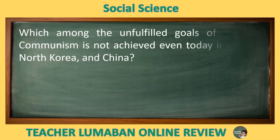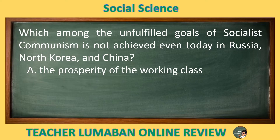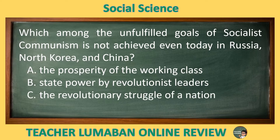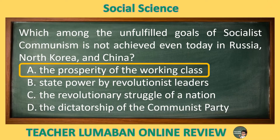Which among the unfulfilled goals of Socialist Communism is not achieved even today in Russia, North Korea, and China? Letter A: The Prosperity of the Working Class. Letter B: State Power by Revolutionist Leaders. Letter C: The Revolutionary Struggle of a Nation. Letter D: The Dictatorship of the Communist Party. The correct answer is Letter A, The Prosperity of the Working Class. Among the unfulfilled goals of Socialist Communism not achieved even today in Russia, North Korea, and China is the prosperity of the working class.